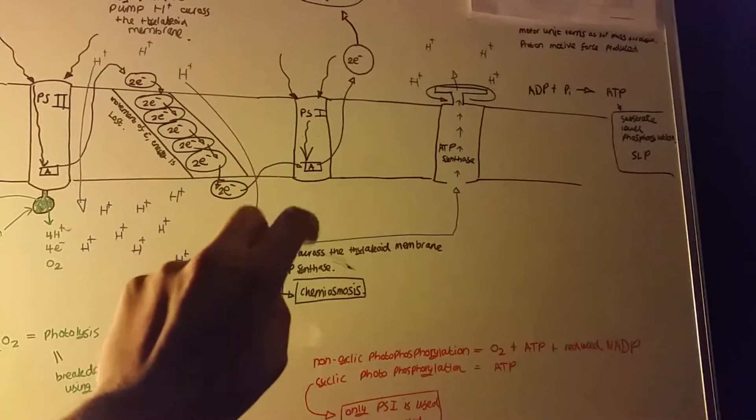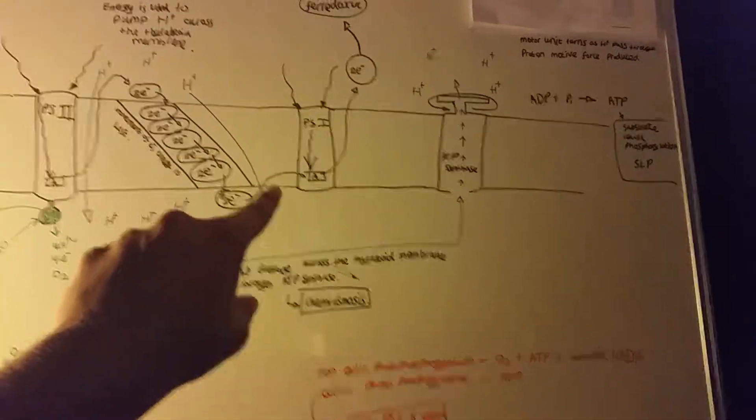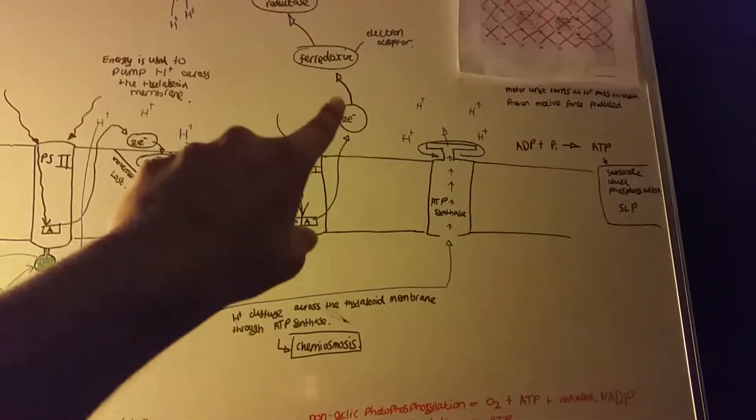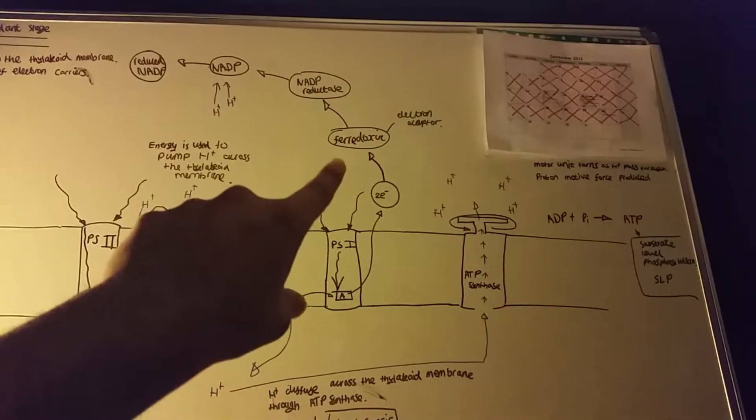The two electrons become excited from the magnesium atom in the porphyrin ring and they are then accepted by an electron acceptor. In this case, it's called ferredoxin.